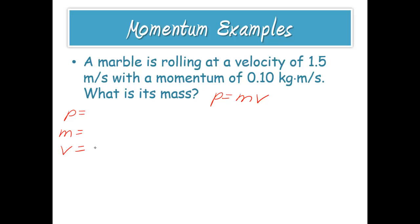All right. So let's see. They gave us 1.5 meters per second. So that's a velocity. And then over here, 0.10 kilogram meters per second. That's a momentum. All right. So that means we have everything but this M here. So that means we're going to be solving for mass.